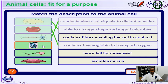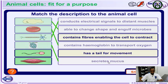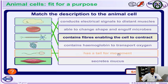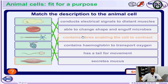Now let's take a look at the goblet cells. Goblet cells secrete mucus to lubricate and protect the cells. What about the sperm cells? The sperm cells have a tail for movement. Now what about the muscle cells? The muscle cells contain fibers which enable the cells to contract.